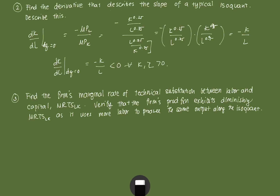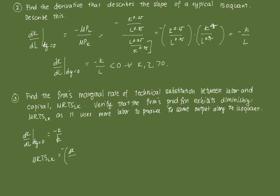Next, we find the marginal rate of technical substitution between labor and capital, MRTSLK. From part 2, we know DK over DL along the same isoquant equals negative K over L. By definition, MRTSLK is the negative of the slope (negative of DK over DL at DQ = 0), so that's the negative of negative K over L, which equals K over L. That's your MRTSLK.